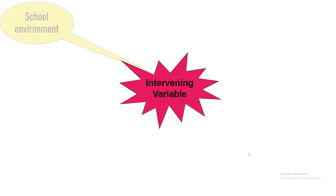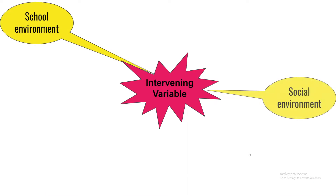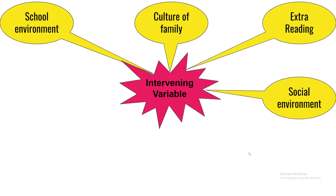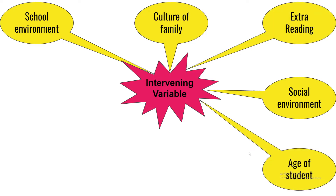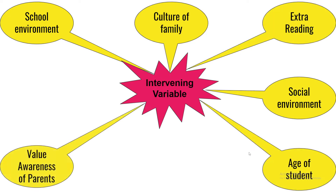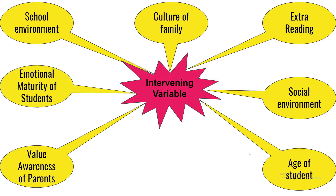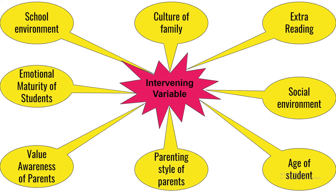For example: school environment, social environment, culture of family, extra reading, age of students, value awareness of parents, emotional maturity of students, and parenting style of parents. In our example, these variables are ignored. Therefore, they are called intervening variables for the example that we have discussed till now.